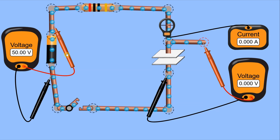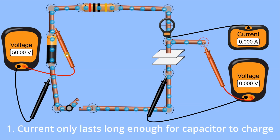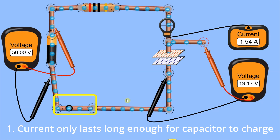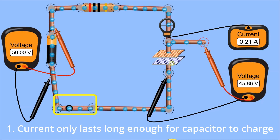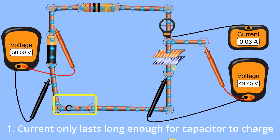The first thing to consider is that current only lasts long enough for the capacitor to charge. To see that, I'm going to close the switch. What we're going to see is the current start to flow — you'll see the electrons flowing onto the bottom plate and then away from the top plate as charge builds up over time. And you can see that once the capacitor is full, current stops.